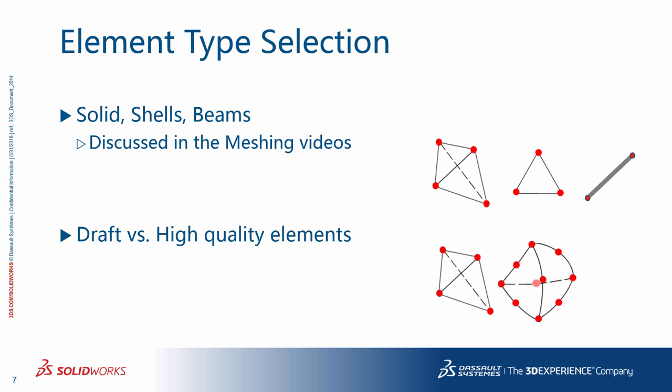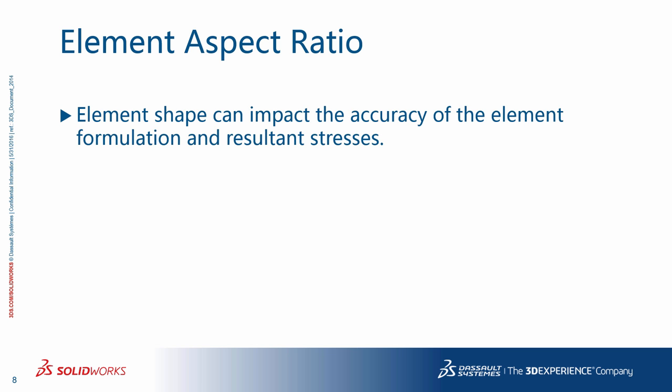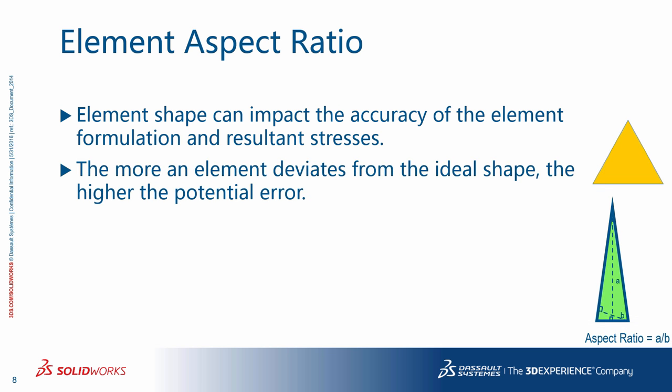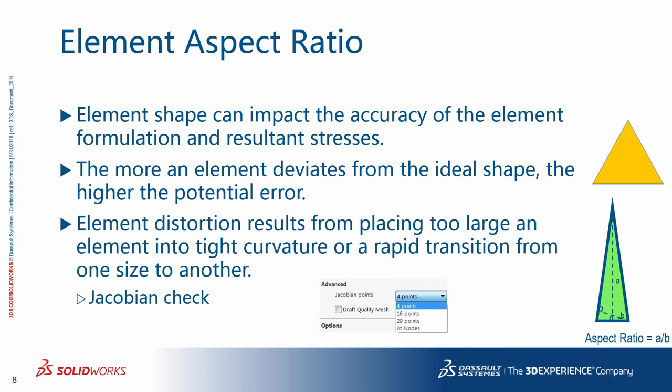We also talked about draft versus high-quality elements previously. Element shape can impact the accuracy of the element formulation and the resultant stresses — the more proportionate the shape of the element, the better. The more an element deviates from the ideal shape, the higher the potential error. A stretched element with a high aspect ratio is less accurate. Element distortion results from placing too large an element into a tight curvature, or a rapid transition from one size to another. To check for distorted elements, the program has the so-called Jacobian check.